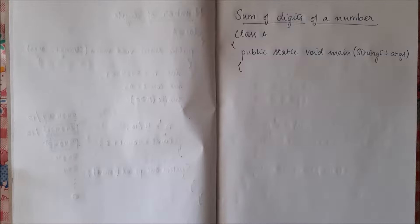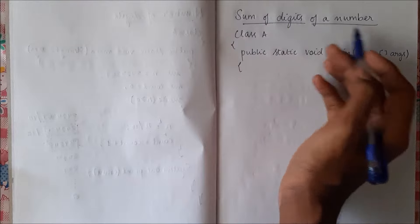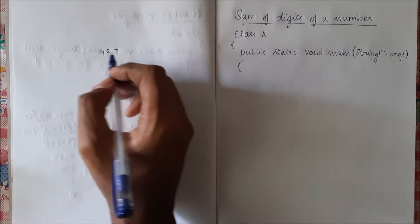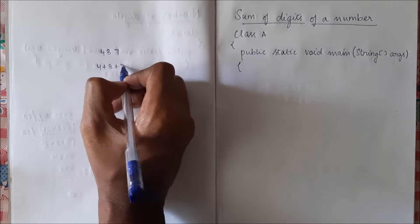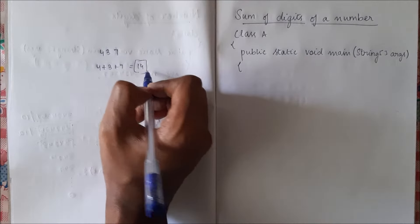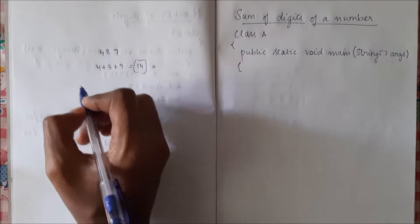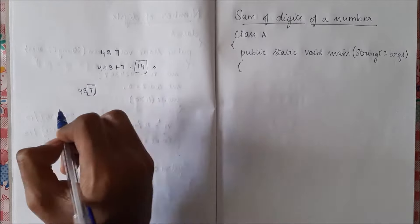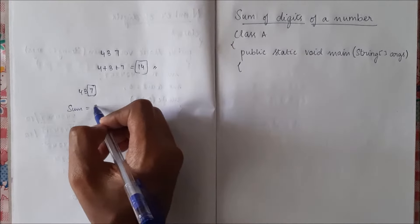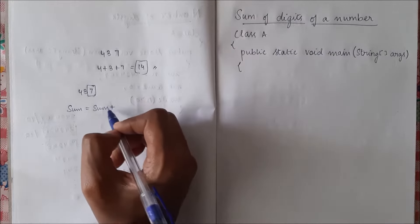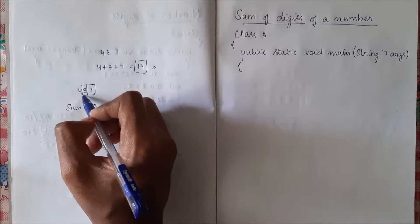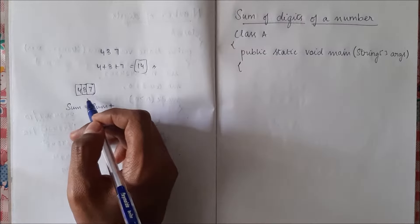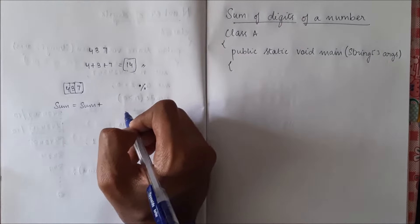In this program we'll see how to find the sum of the digits of a number. If we have a number 437, the sum of the digits will be 4 plus 3 plus 7 equal to 14. That is the required output. So in 437, I will take one digit and add it into sum, then take the next digit and add it to sum, and the next digit and add it to sum. To do that we will use the modulo operator.